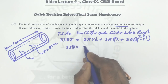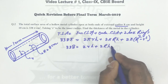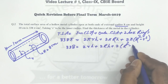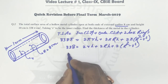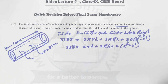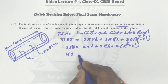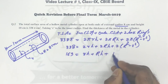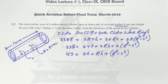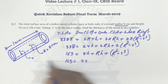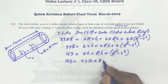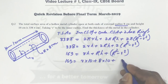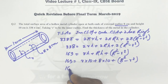Pi appears on both sides so it cancels, giving 338 equals 2rh plus 2Rh plus 2(R² minus r²). Dividing both sides by 2 gives 169 equals rh plus Rh plus R² minus r². Substituting the known values — height h equals 10 and outer radius R equals 8 — we get 169 equals 10r plus 80 plus 64 minus r².